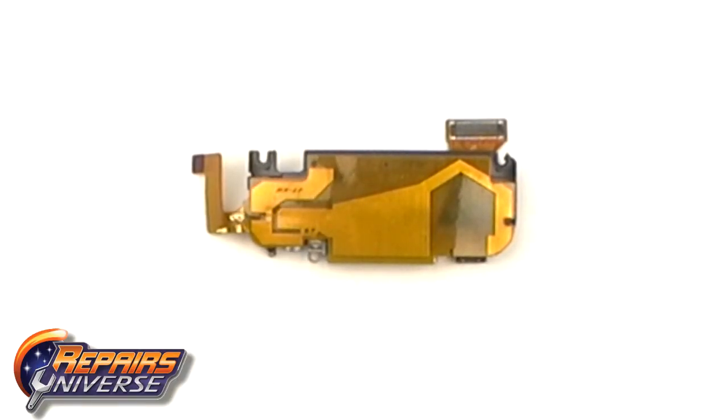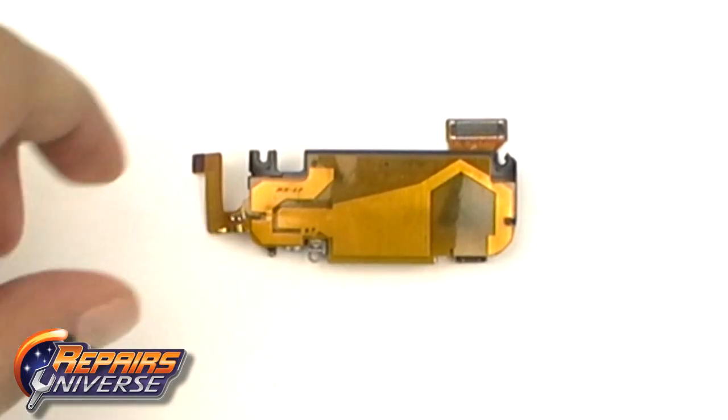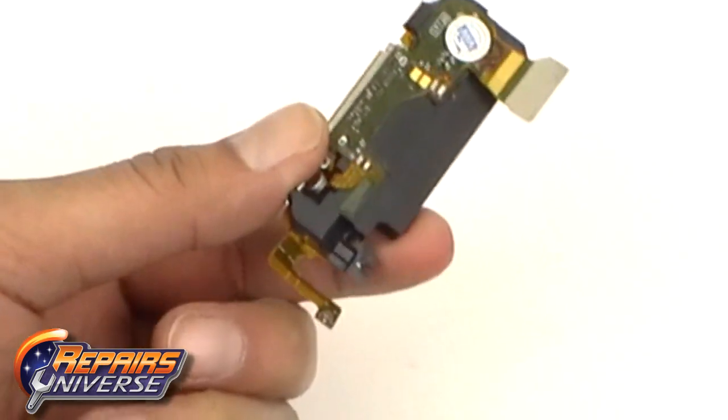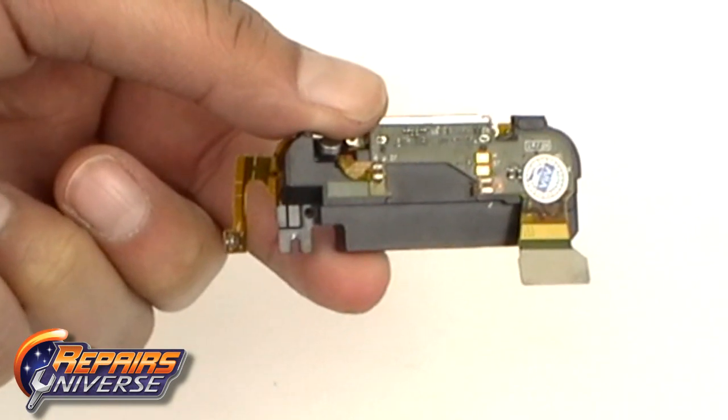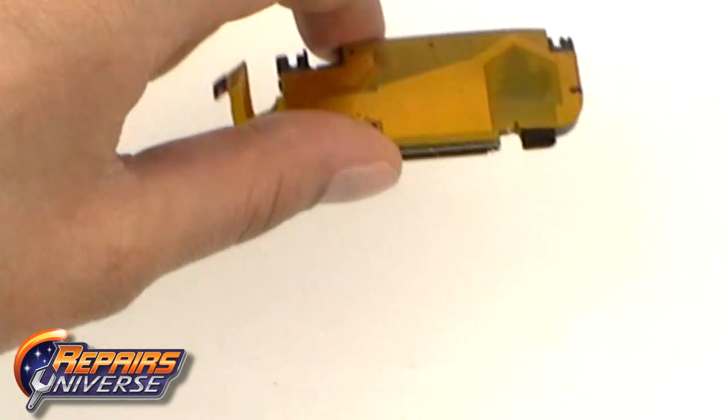Are you having trouble charging your device, or is your microphone going out? We have the charge dock port, which is pre-assembled and includes the charging port, microphone, and the ringer buzzer speaker. With this part, you can avoid soldering, making the repair much easier.